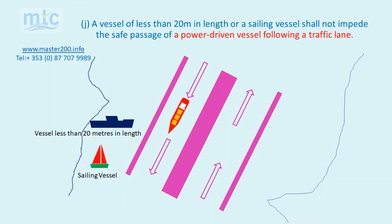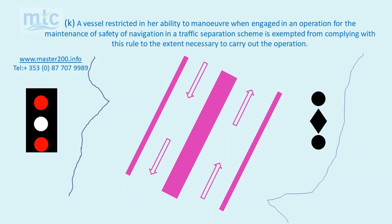A vessel of less than 20 metres in length or a sailing vessel shall not impede the safe passage of a power driven vessel following a traffic lane. Again, these vessels, as per Rule 8f, need to take early action to allow sufficient sea room for the safe passage of the other vessel.